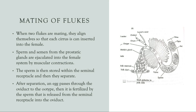Going over the mating of flukes now. When two flukes are mating, they align themselves so that each cirrus can be inserted into the female. Sperm and semen from the prostatic glands are ejaculated into the female system by muscular contractions. The sperm is stored within the seminal receptacle and then they separate. After separation, an egg passes through the oviduct to the ootype, which is right here, then it is fertilized by the sperm that is released from the seminal receptacle into the oviduct. After that, a zygote is formed with a hard shell around it.